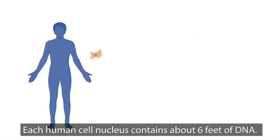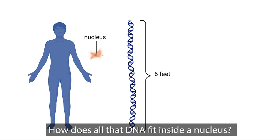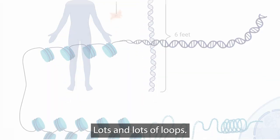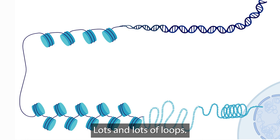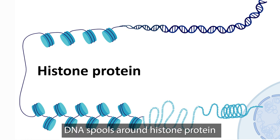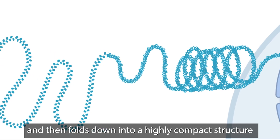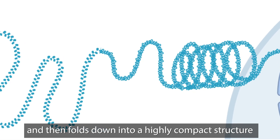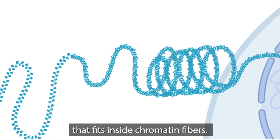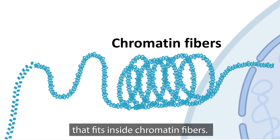Each human cell nucleus contains about six feet of DNA. How does all that DNA fit inside a nucleus? Lots and lots of loops. DNA spools around histone protein and then folds down into a highly compact structure that fits inside chromatin fibers.